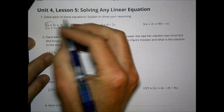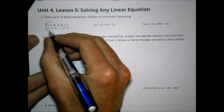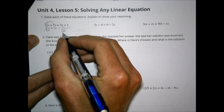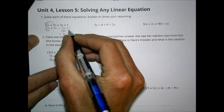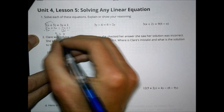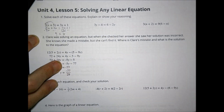Subtracting 2x from both sides and subtracting 1 from both sides leaves x over here and 9 on that side, so x equals 9.